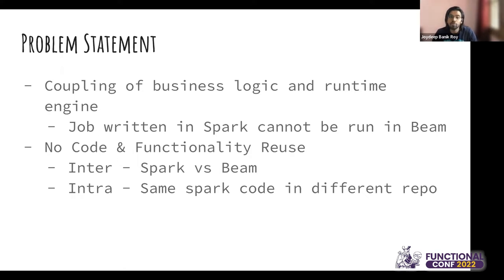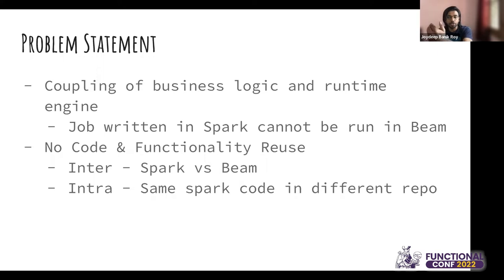The second problem was no code and functionality reuse. This means two things: inter and intra. Inter — between Spark and Beam — means a functionality written in Spark cannot be taken and run on Beam. Intra means we also wanted to use the compositionality of functional programming. Similar logic was lying in different silos, all doing the same work. The goal was to have a well-defined library where things can be reused, and then extend it across platforms.